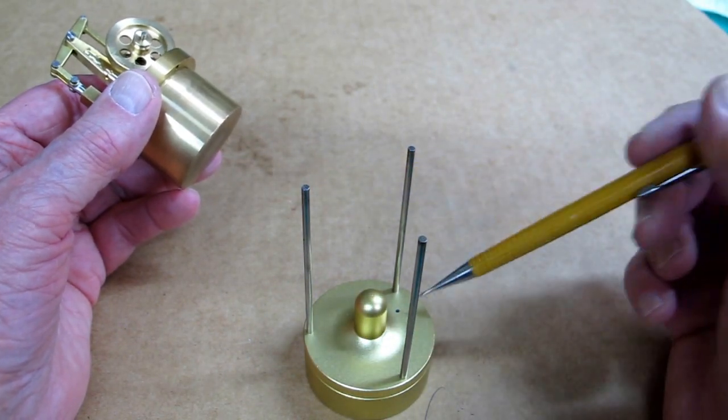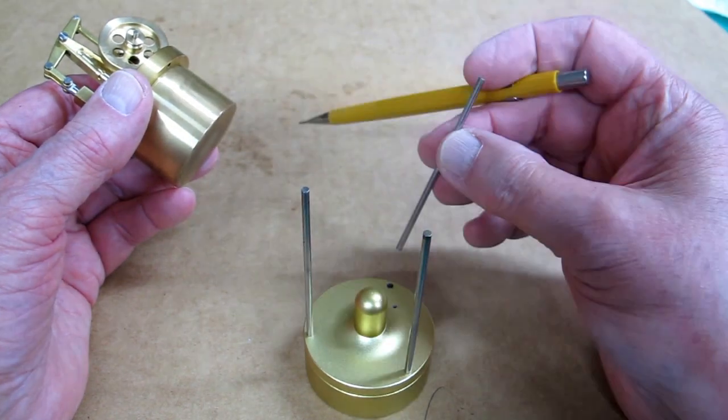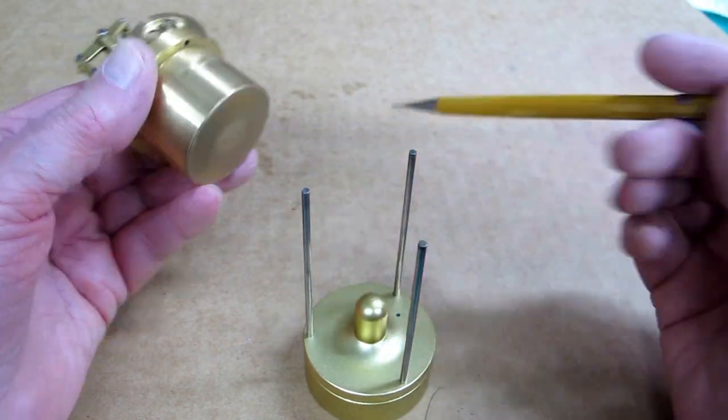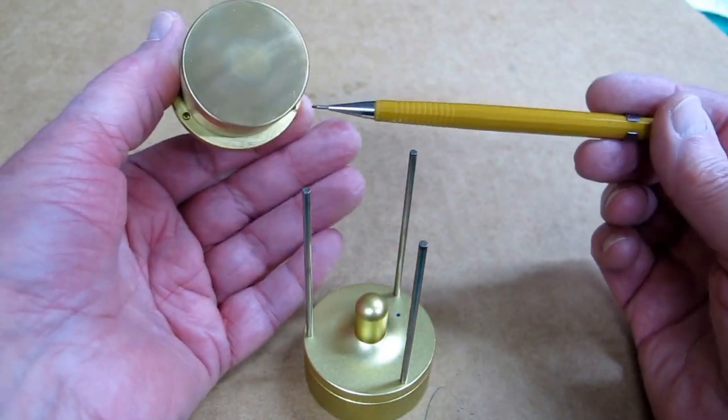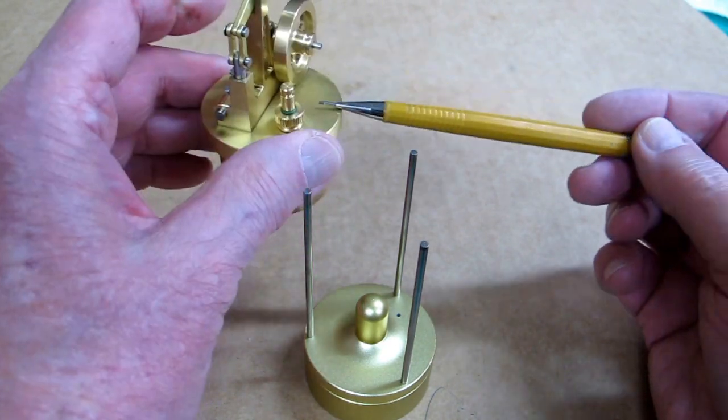This one has three rods that sit down in pockets in the alcohol burner. And they index into these holes, which is the lid of the boiler.